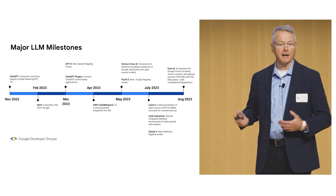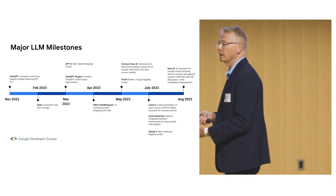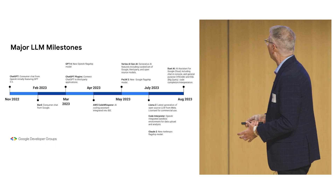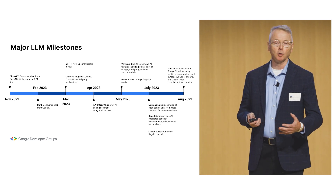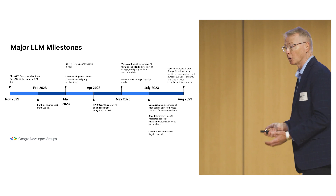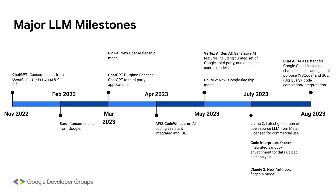In May, Vertex AI Generative AI came out — one of the products my team works on — providing a model garden with curated Google models, open source models, and third-party models, as well as a Google console to interact with them. The new Google flagship model PaLM 2 also came out. In July, LLaMA 2 came out from Meta — an open source model that, with a small asterisk, is usable in commercial settings, which is a very important development. OpenAI released Code Interpreter, Anthropic released Claude 2, and Duet AI within Google Cloud came out in preview, giving developers a way to turn text into code, get answers about Google Cloud, and interpret code.